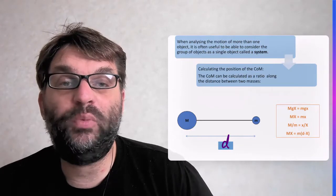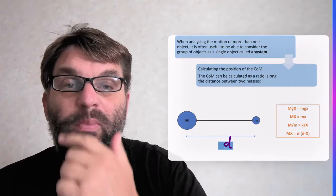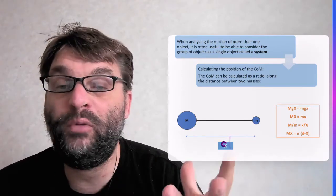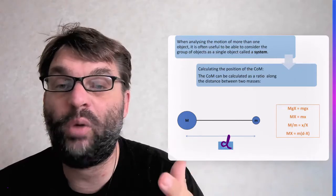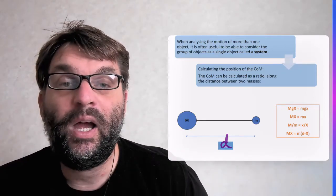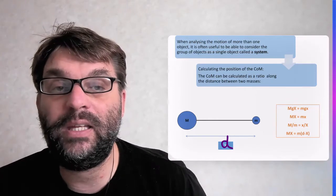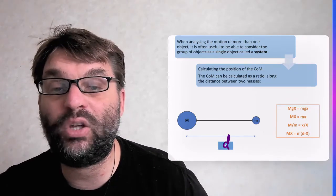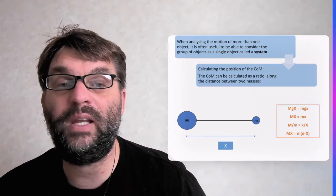When you're looking at an object's motion, it's useful to be able to consider a group of objects rather than a single object - this is known as a system. And you can actually calculate the Centre of Mass of a system of at least two objects.